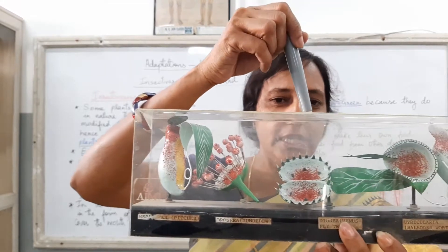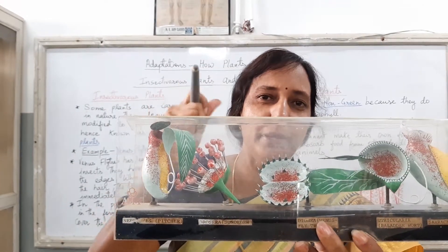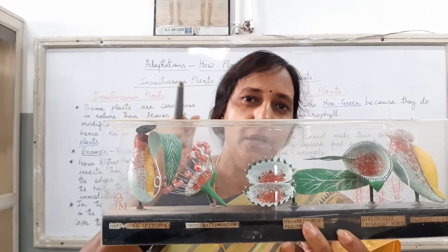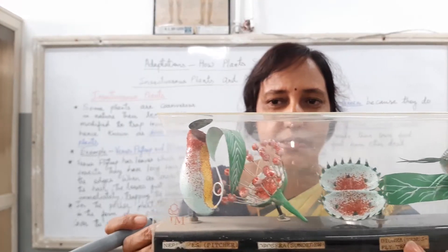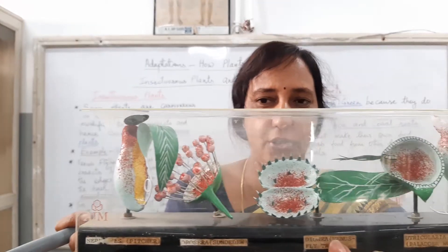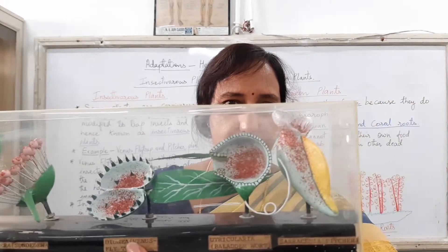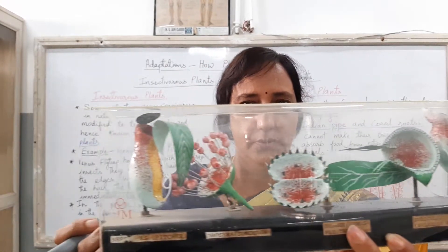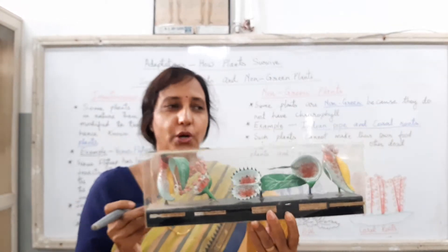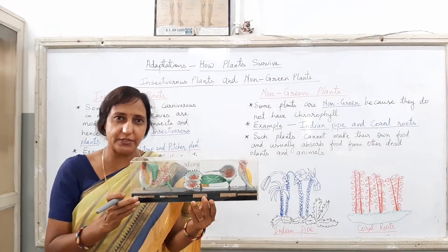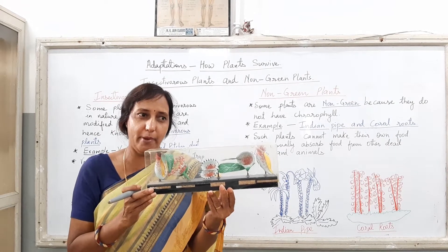As the insect is touching the hairs, it is closing its leaves and trapping the insects within. So just have a look at all these plants closely. And I hope through this model, you are able to understand what the Venus flytrap and the pitcher plant are all about.